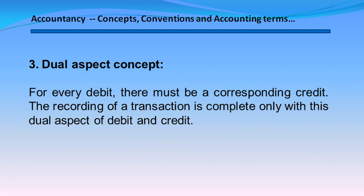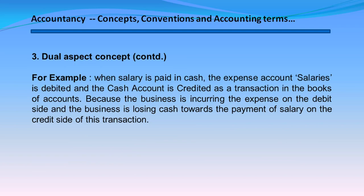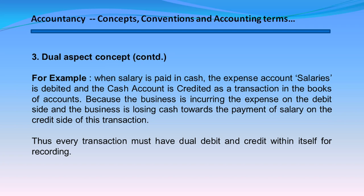Dual Aspect Concept. For every debit, there must be a corresponding credit. The recording of a transaction is complete only with this dual aspect of debit and credit. For example, when the salary is paid in cash, the expense account salary is debited and the cash account is credited. The business is incurring the expense on the debit side and losing cash towards payment of salary on the credit side. Thus, every transaction must have dual debit and credit within itself for a recording.